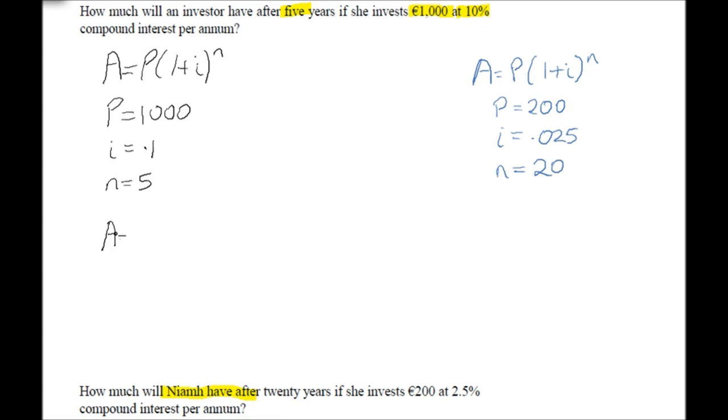So A is equal to - P is 1000, by 1 plus i, so it's 1 plus 0.1. And it's to the power of n, so n is 5.